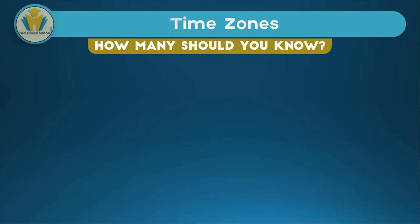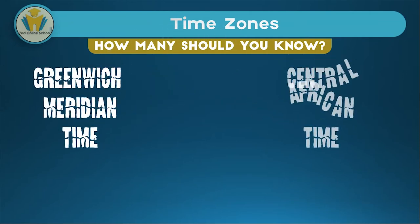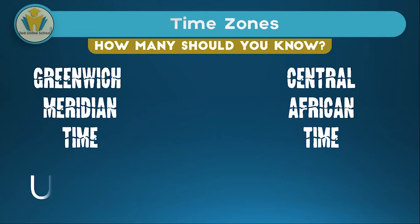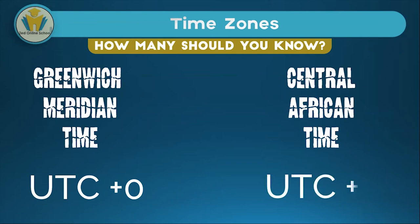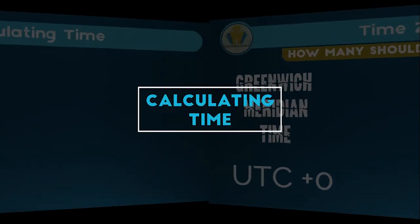In the Zambian syllabus you should know these two time zones: Greenwich Meridian Time and Central African Time. Greenwich Meridian Time is the same as coordinated universal time — there's no increase or decrease. For Central African Time you add two hours to the coordinated universal time. You should also note that Greenwich Meridian Time may be abbreviated as GMT while Central African Time may be abbreviated as CAT, so don't get confused when you find such abbreviations used in questions.